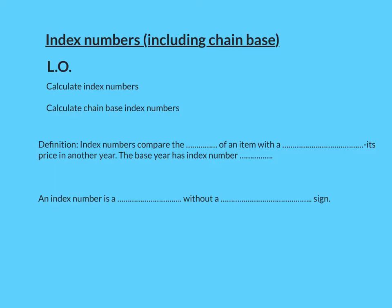To recap, index numbers are about comparing prices — very real-world examples. They compare the price of an item with a base year price. You choose a base year, a starting point, and each time you're comparing it to that original amount, looking at percentage change. The base year has a base percentage of 100%. Because an index number is a percentage without a percentage sign, the base year has index number 100.